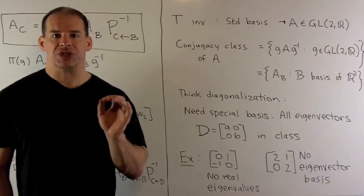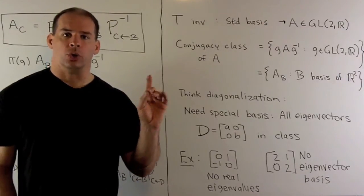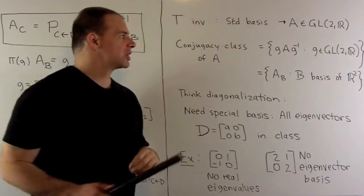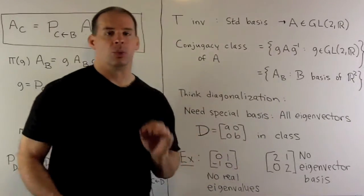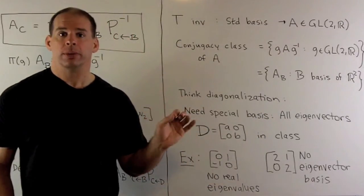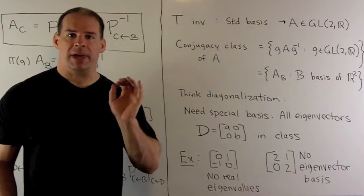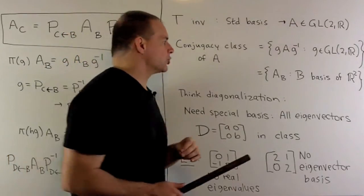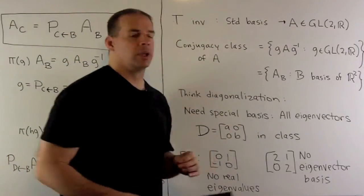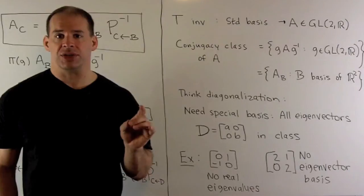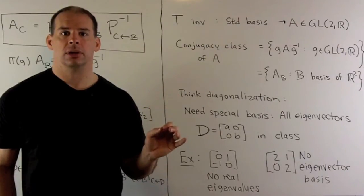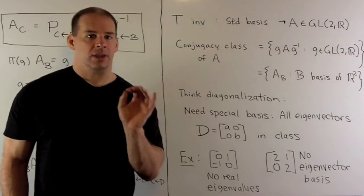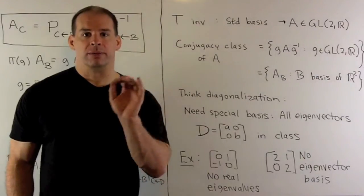If we choose a standard basis, we'll call the corresponding matrix A. Now, the conjugacy class of A, on the group level, that's defined as all products G A G inverse, where G ranges over all elements in our group. If I think in terms of bases, we'll have all matrices A_B, where B ranges over all bases for R².